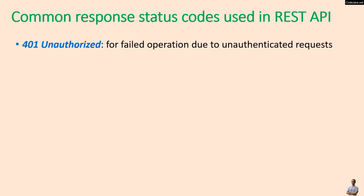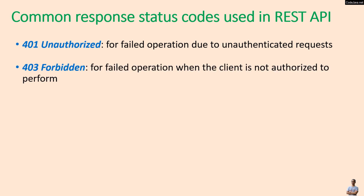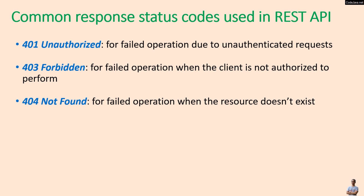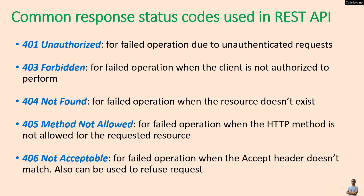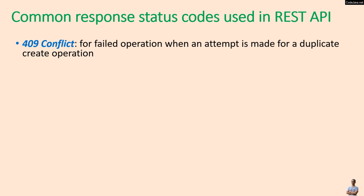Use status code 401 Unauthorized for failed operations due to unauthenticated requests. 403 Forbidden for failed operations when the client is not authorized to perform the request. 404 Not Found when the resource doesn't exist on the server. 405 Method Not Allowed when the HTTP method is not allowed for the requested resource. 406 Not Acceptable when the Accept header doesn't match, also used to refuse a request. 409 Conflict for failed operations when an attempt is made for a duplicate create operation.